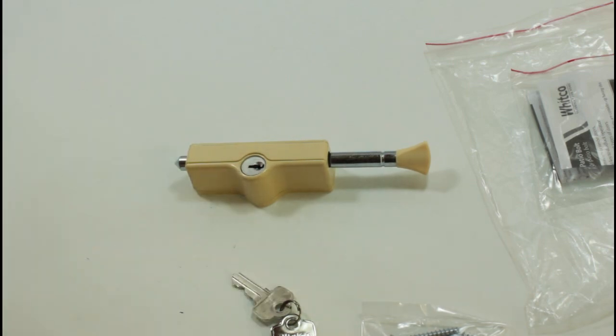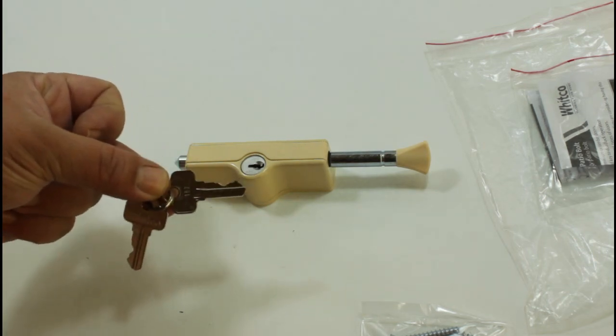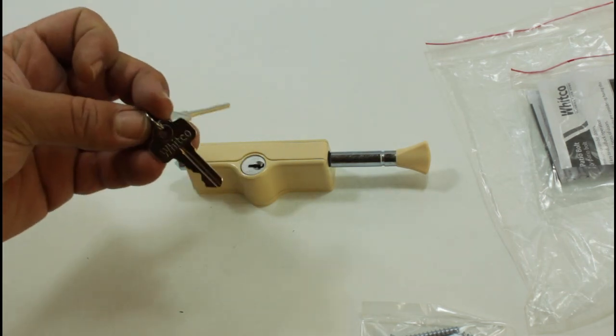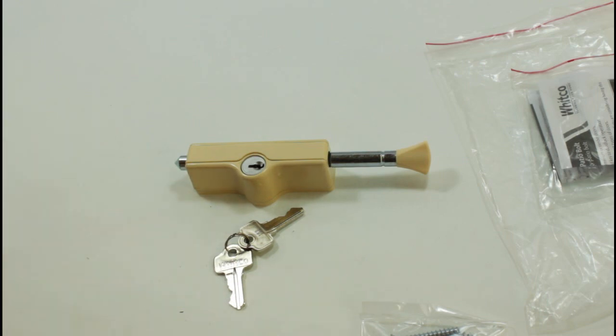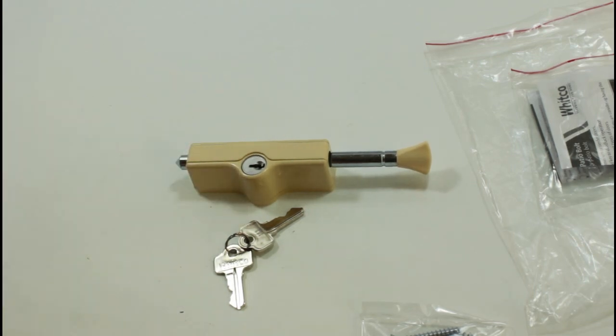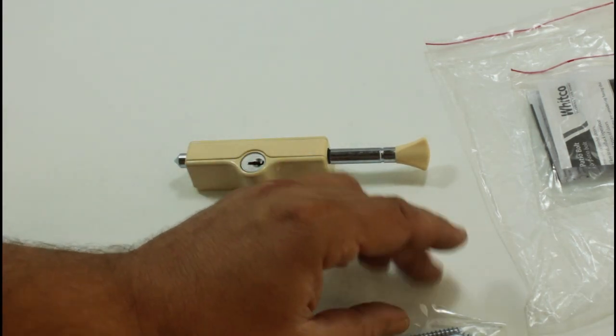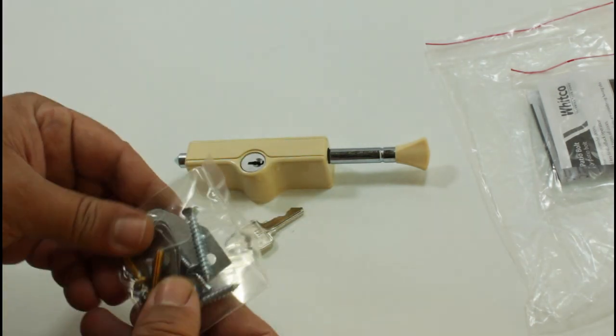One more feature of these particular type of locks is that you can actually have it set to your common Lockwood front door house lock or house lock key if you've got a Lockwood style of key. If you've got one of our locksmiths on site, they can actually reconfigure these to suit your normal house key. So you can actually use one standard key for your deadlocks and your patio bolts. It does cost extra but it is an option.